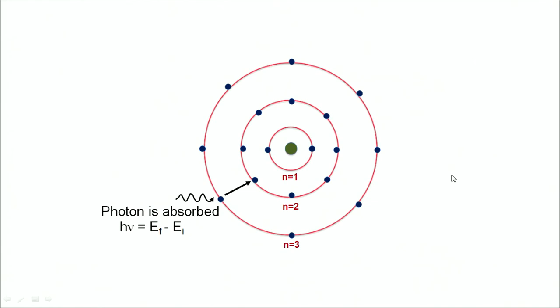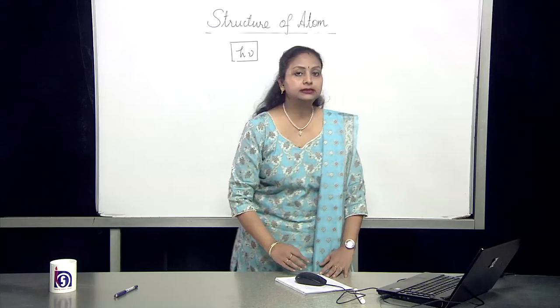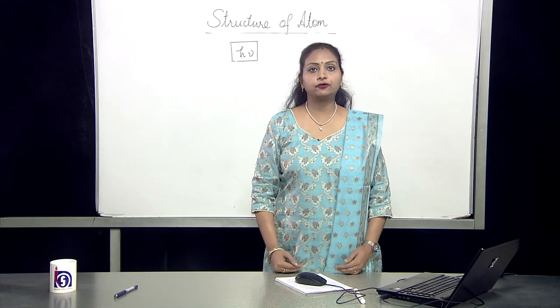The converse of this phenomena is the absorption of photon. That is, an electron in the outer most orbit absorbs an energy hν which is equal to E_f - E_i. Then this electron jumps from an outer orbit to an inner orbit. So, the emission and the absorption takes place in discrete form.